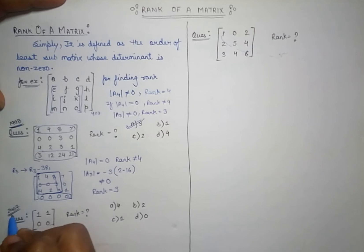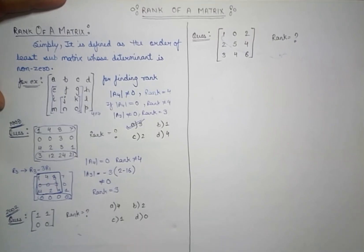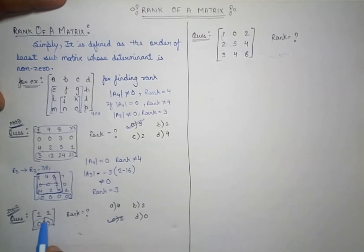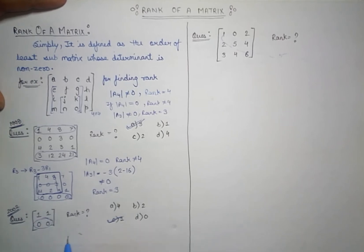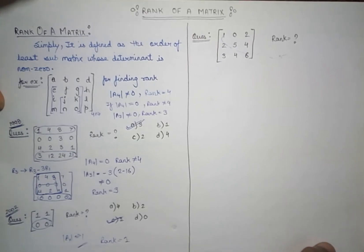Now for the GATE 2003 question, which is one of the simplest from this section. Here you can directly see that the rank of this particular matrix is going to be 1, because the matrix is already reduced — there are no further sub-matrices to find. The only non-trivial sub-matrix is A1, and its determinant equals 1, therefore the rank equals 1.